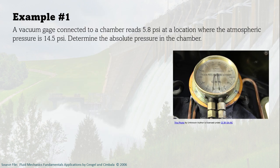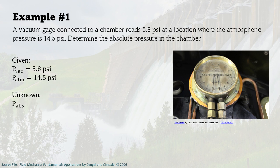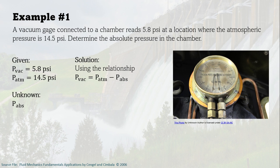Let us have an example to understand the relationship between these pressures. A vacuum gauge connected to a chamber reads 5.8 PSI at a location where the atmospheric pressure is 14.5 PSI. We are to determine the absolute pressure in the chamber. Since the vacuum pressure is 5.8 PSI, using the relationship that vacuum pressure equals atmospheric pressure minus absolute pressure, and substituting the given values, we get the absolute pressure as 8.7 PSI. The absolute pressure is less than atmospheric because we have a vacuum pressure.